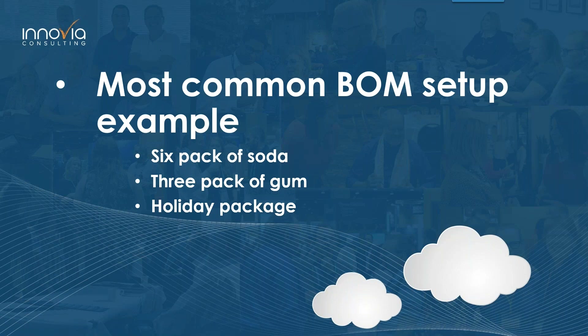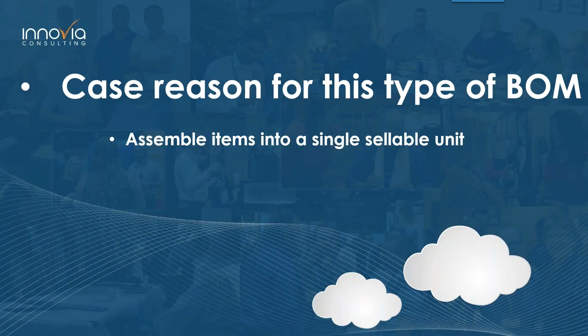The first way is the most common way to set up a bill of materials. Examples would be a six pack of soda, a three pack of gum, or possibly a holiday package that contains a number of different items sold as a package deal for a specified amount of time prior to the holiday. We want to assemble six items into a package that will be tracked, sold, and shipped as a single six pack unit. The six pack of soda contains six individual soda cans and a plastic holder, and could offer a discounted price over purchasing individual cans.